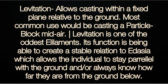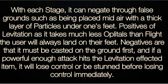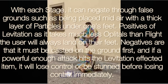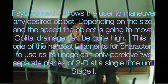Levitation allows casting within a fixed plane relative to the ground; its most common use would be casting a particle block mid-air. It is one of the oddest elements, with its function being able to create a stable relation to adagia, allowing the individual to stay parallel with the ground and always know how far they are from the ground below. With each stage it can negate through false ground, such as being placed mid-air with a thin layer beneath. Positives of levitation are that it takes much less oplotals than flight and the user will always land on their feet. Negatives are that it must be cast on the ground first, and if a powerful enough attack hits the levitation-affected item it will lose control or be stunned.